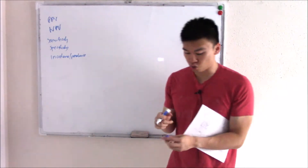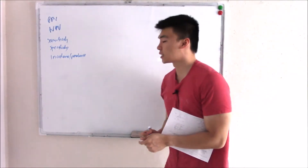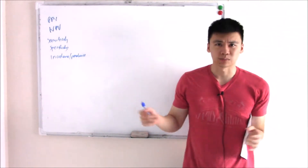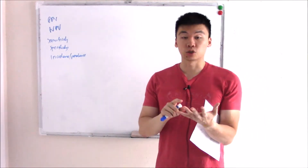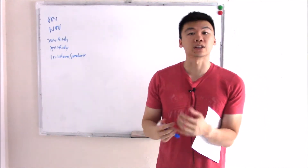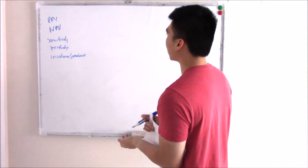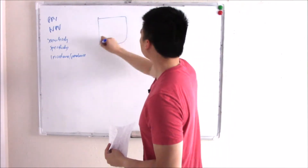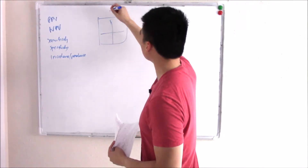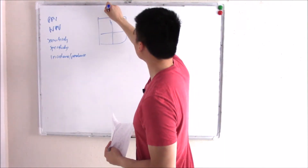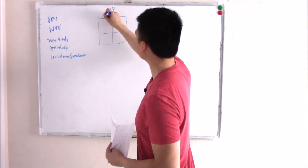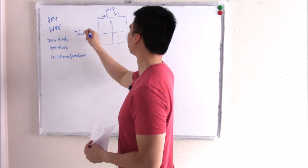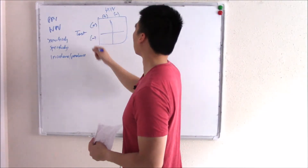We'll start with our trusty 2x2 table, but let's do something different. Instead of looking for risk and exposure, let's say you tried to make a test that would pick up HIV. We put the disease on top, which is HIV, and whether or not a person has it or doesn't, and then the test on the side — whether the test is positive or negative.